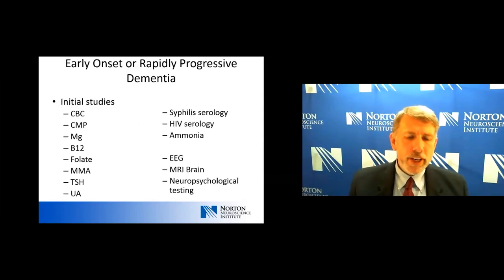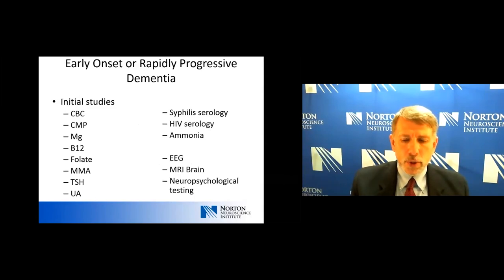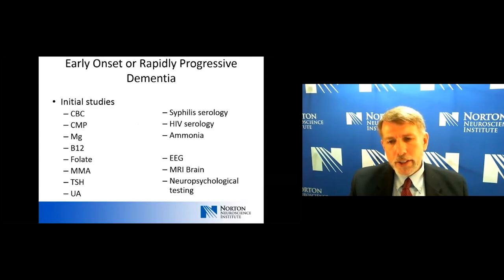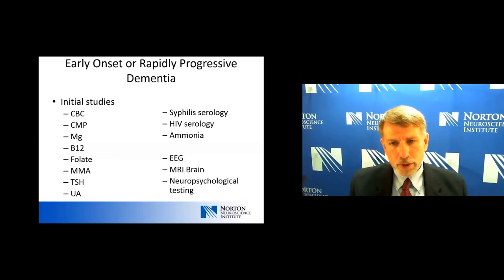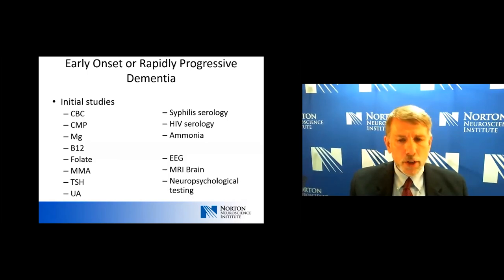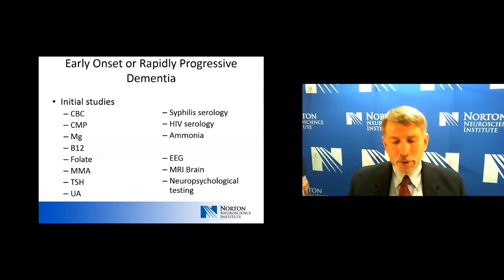If someone has an early onset or rapidly progressive dementia, we want to expand our battery of testing, often in two phases. The first phase overlaps with routine evaluation but adds a few things: syphilis or HIV serology, an ammonia level, an EEG, and in those cases we really would want to consider neuropsychological testing.